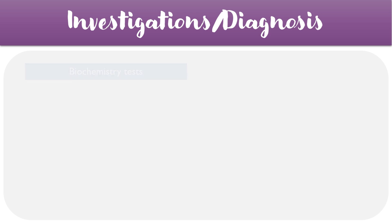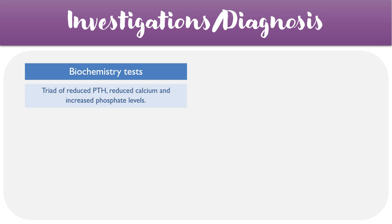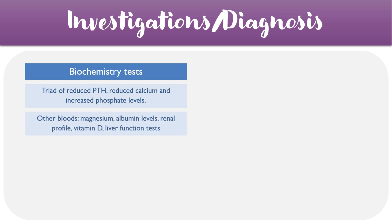Moving on to the diagnosis of hypoparathyroidism, this is largely a biochemical diagnosis, looking for a reduced PTH level, a reduced calcium level, and an increased phosphate level. It's also worth looking at other bloods, including magnesium, albumin, and vitamin D, as these can affect all of the involved electrolytes as well.